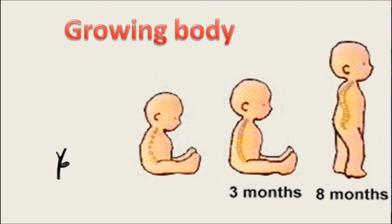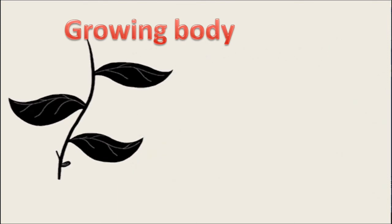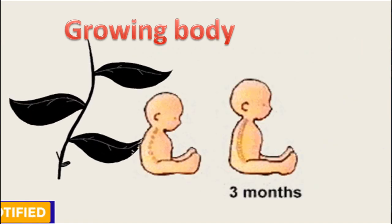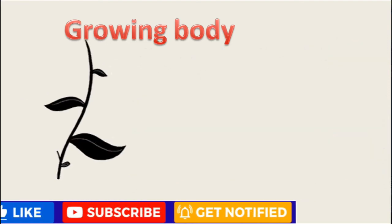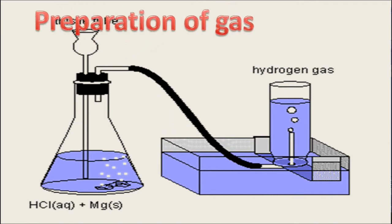Growing of a baby, or growth of the body, in the case of both plants and animals, is a chemical change. In the laboratory, preparation of gas is also an example of chemical change, where reactants change into a new type of molecule or substance, and the product obtained is altogether different from the reactants.